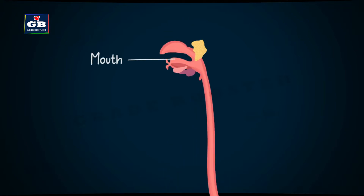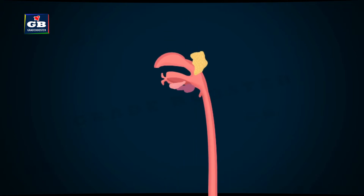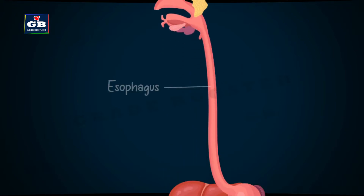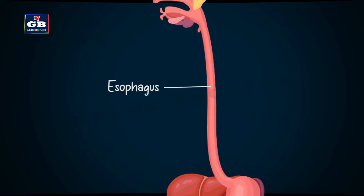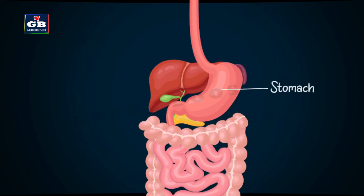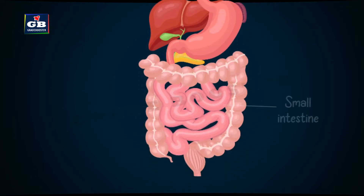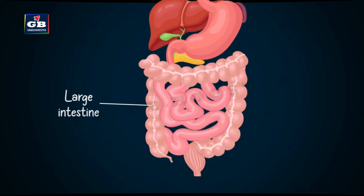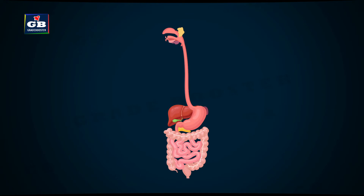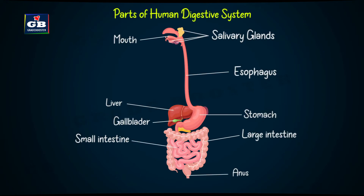This is the mouth. These are salivary glands. This is the esophagus, stomach, liver, pancreas, gallbladder, small intestine, large intestine, and anus. These are the parts of our digestive system.